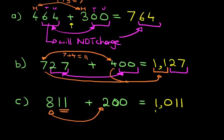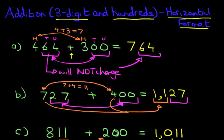8 plus 2 is 10. There's a 10. The 11 does not change. 1,011. And it really is that simple. Adding 3-digit numbers and hundreds using the horizontal format.